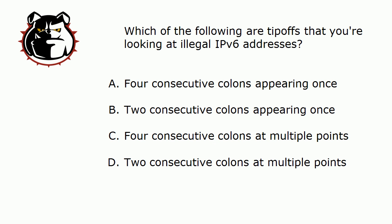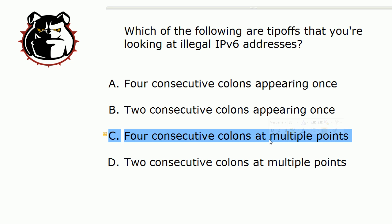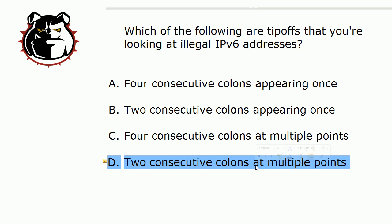Now the first choice left over — two consecutive colons appearing once — that is perfectly legal, so that would be fine. As a matter of fact, that's the only one of these that is legal, because two consecutive colons at multiple points in the same address indicates that zero compression has been used more than once, and you cannot do that. So as far as illegal addresses: four colons appearing once, four colons at multiple points in the address, and two consecutive colons at multiple points in the address are all illegal — definitely something you want to watch out for on exam day.